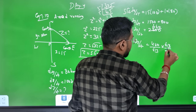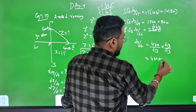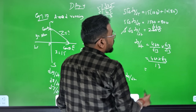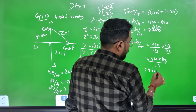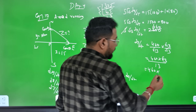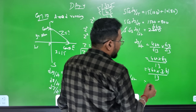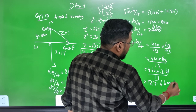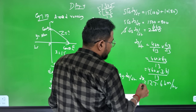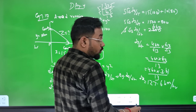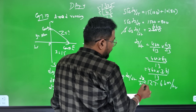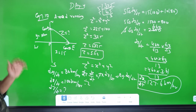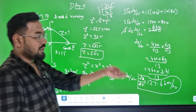Therefore dz/dt = 2300 divided by 5√13. Simplifying: 460 divided by √13, which equals 460√13/13 ≈ 127.6 km per hour. So dz/dt = 127.6 km per hour — that is the answer.